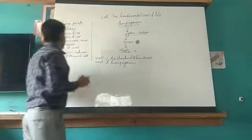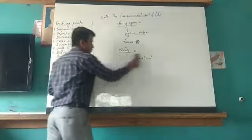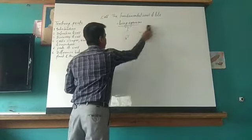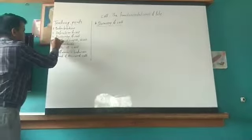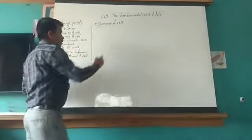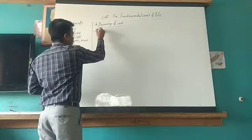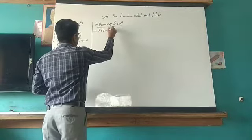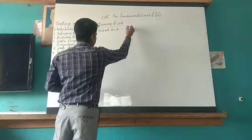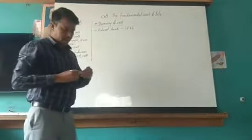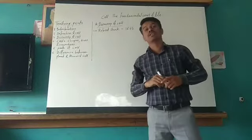Now, after this definition of the cell, we will discuss the next point — that is, the discovery of the cell. Now we will discuss the discovery of the cell. That is our third point. First, who discovered the cell? It was discovered by the well-known scientist Robert Hooke, in the year 1665.